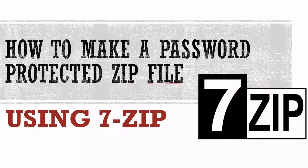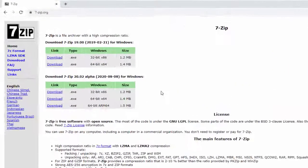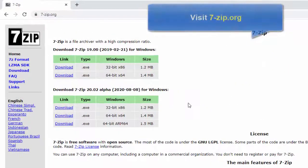Hi friends! This video will show you how to make a password-protected zip file using 7-zip in Windows 10. 7-zip is maybe the most popular tool used in the Windows 10 system. 7-zip can help you easily compress files and folders into one compressed file. First, download and install the 7-zip software.